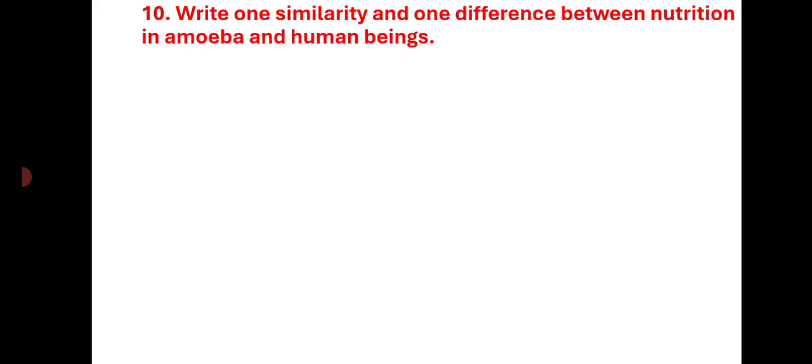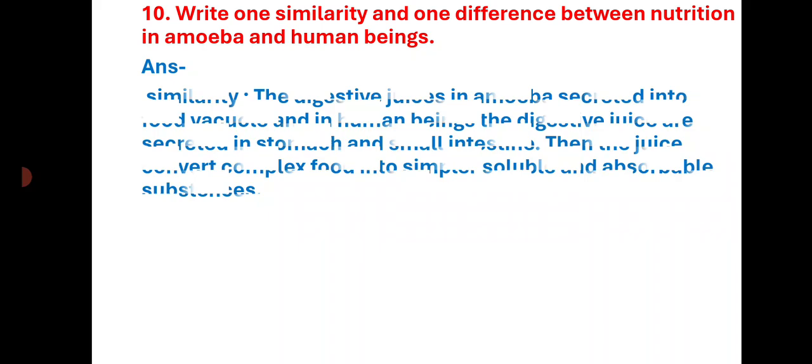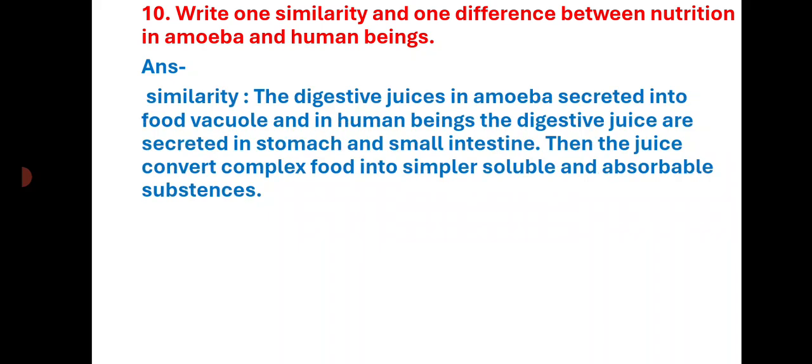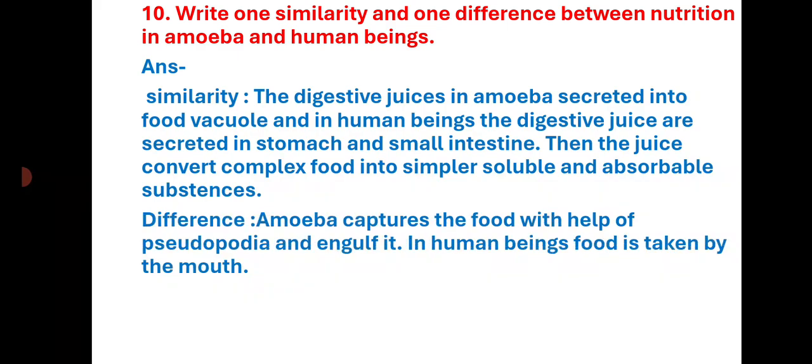Question 10: Write one similarity and one difference between nutrition in amoeba and human beings. Similarity: Digestive juices are secreted in the stomach and small intestine, and these juices convert complex food into simple, soluble, and absorbable substances. Difference: Amoeba captures food with the help of pseudopodia and engulfs it, whereas in human beings food is taken in by the mouth.